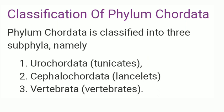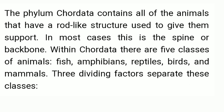Phylum Chordata is classified into three subphyla: Urochordata, which includes tunicates; Cephalochordata, which includes lancelets; and Vertebrata, which includes vertebrates. Here we will discuss Phylum Vertebrata in detail. Phylum Chordata contains all animals that have a rod-like structure used to give them support — in most cases this is the spine or backbone. Within Chordata there are five classes: fishes, amphibians, reptiles, birds, and mammals.